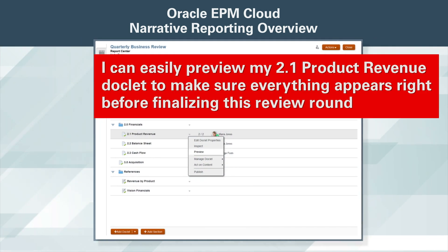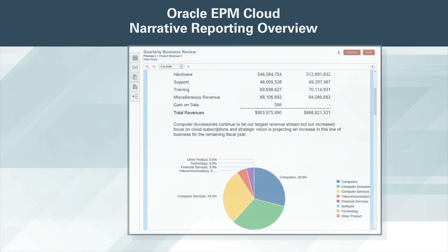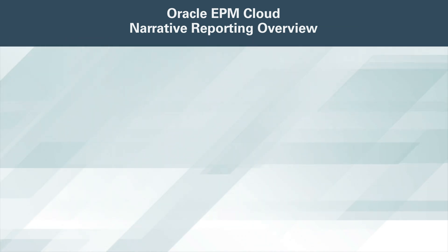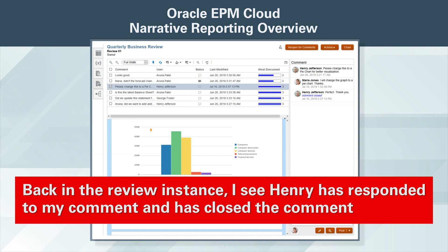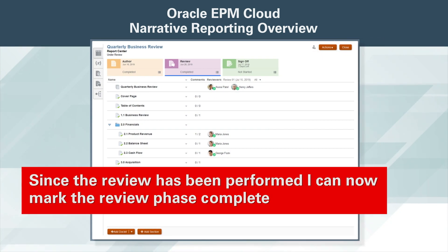I can easily preview my 2.1 product revenue doclet to make sure everything appears right before finalizing this review round. The chart has been updated and I can now either start a second review phase or prepare for sign-off. Back in the review instance, I see Henry has responded to my comment and has closed the comment. Since the review has been performed, I can now mark the review phase complete.